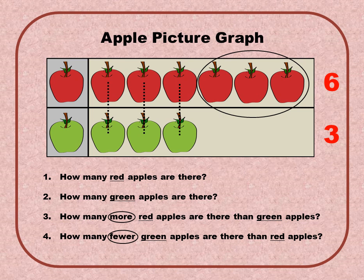You can tell by looking at this picture that there are definitely more red apples than green. But if you're still having a hard time understanding this, ask yourself: how many more green apples would I need to add in order for them to be equal? You can see that you would need to add three more.